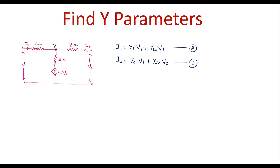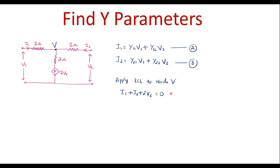Now apply KCL to node V. KCL says that incoming current is equal to outgoing current. Here, I1 current is incoming, I2 current is incoming, and 2V2 current is incoming. Therefore, I can write: I1 plus I2 plus 2V2 is equal to 0. So let me call it equation 1.